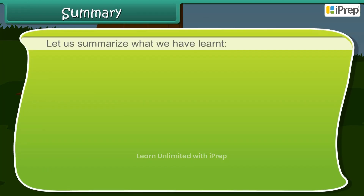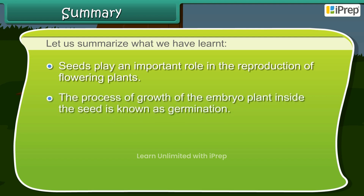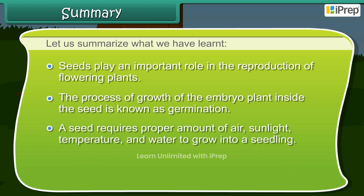Seeds play an important role in the reproduction of flowering plants. The process of growth of the embryo plant inside the seed is known as germination. A seed requires a proper amount of air, sunlight, temperature, and water to grow into a seedling.